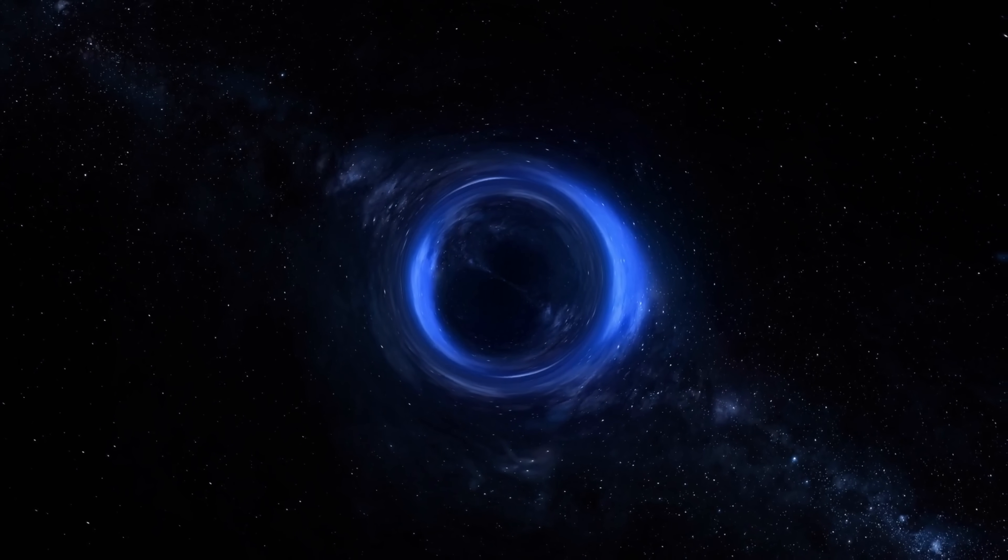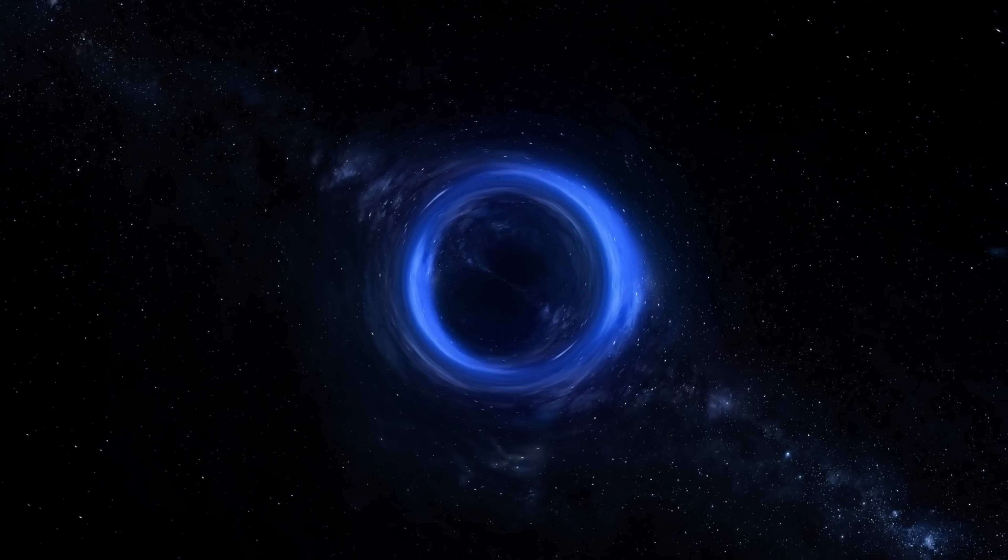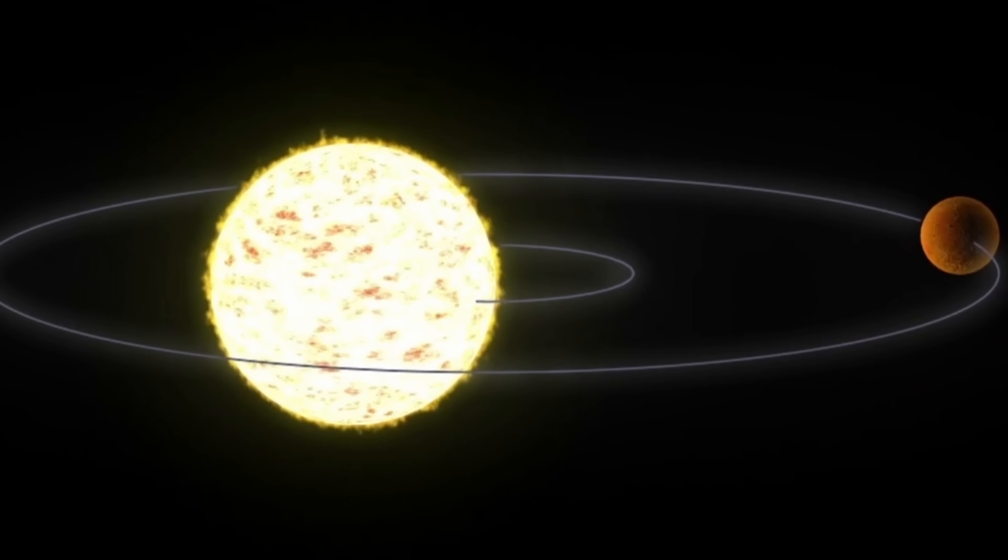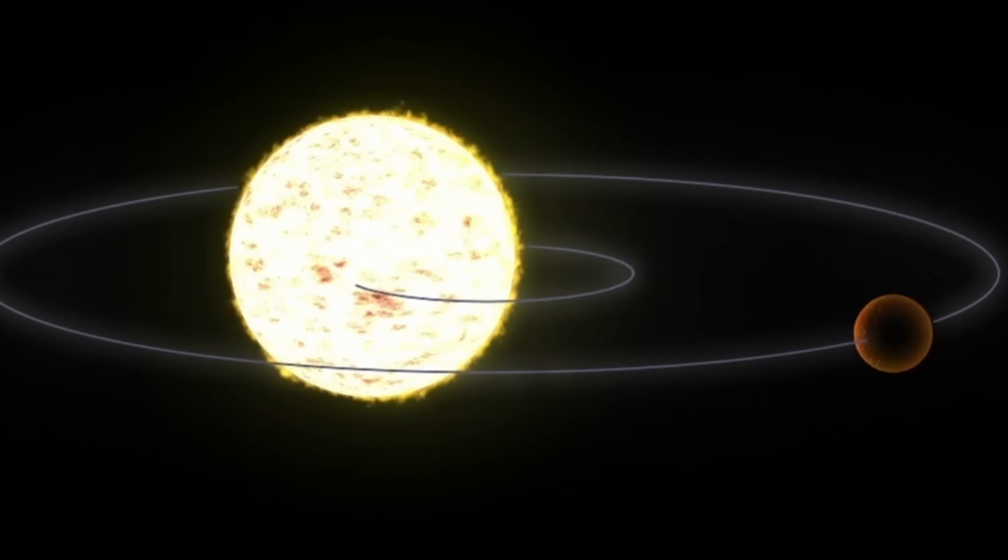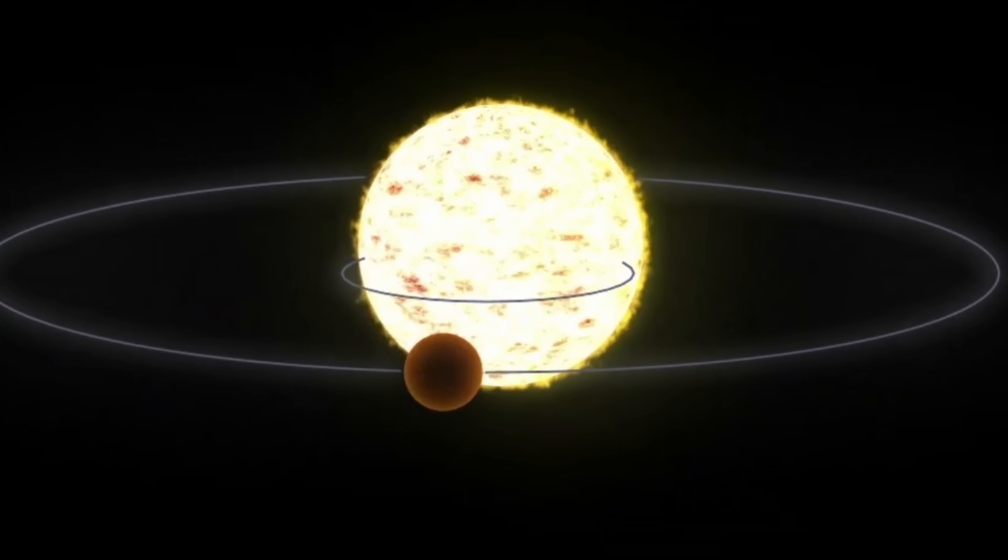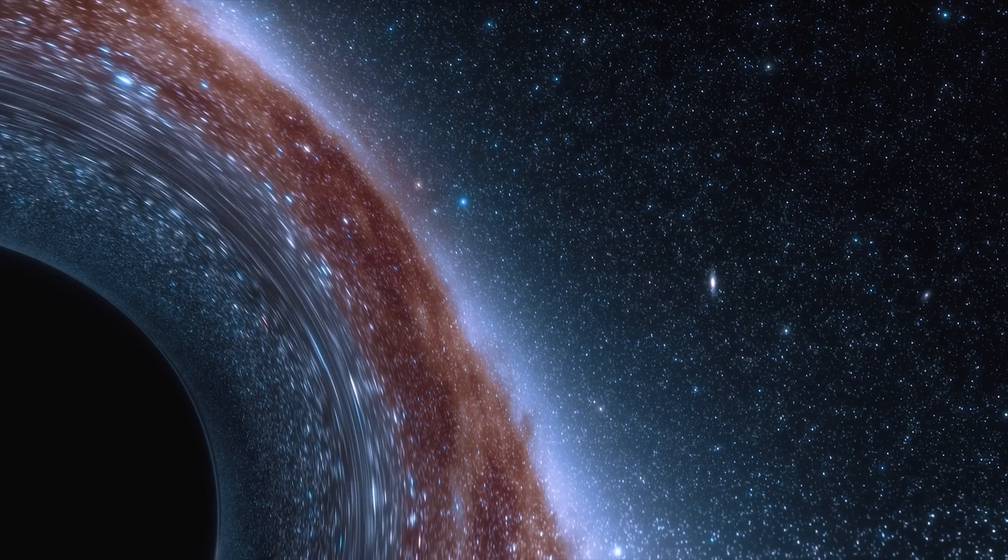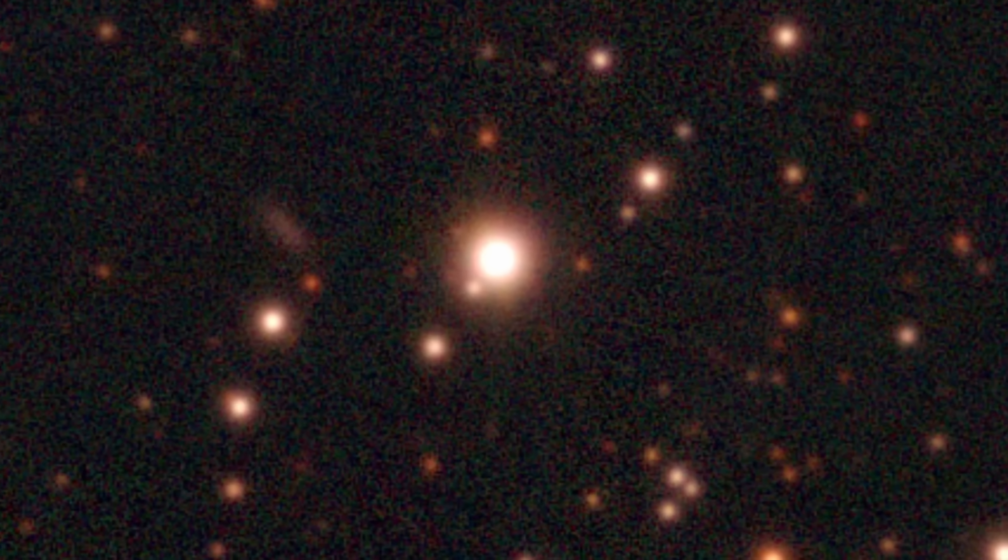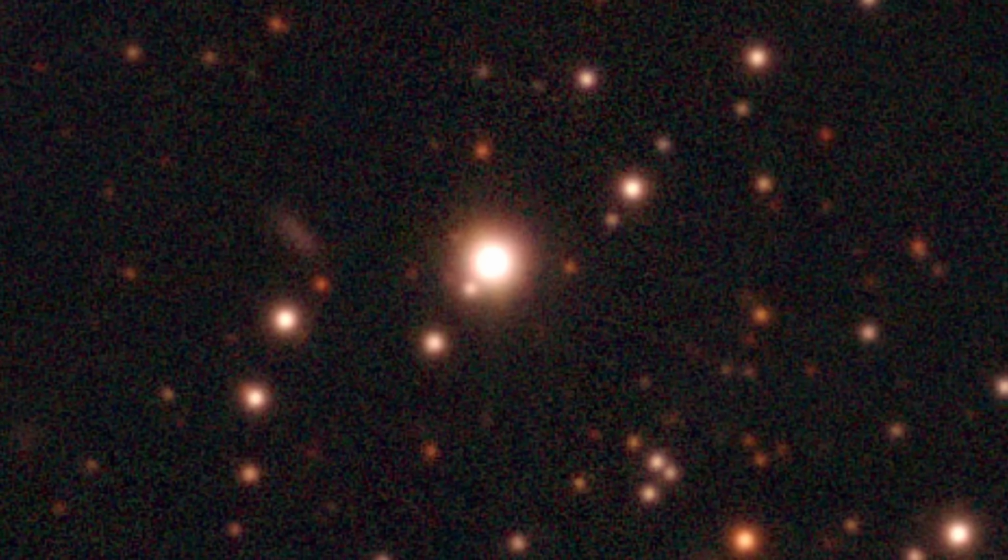And so for Gaia BH2, the black hole was estimated to be about 8.94 solar masses, or just under 9 times the mass of the sun, with the immense gravitational pull causing the visible companion to wobble as it orbits. In comparison, Gaia BH1 was orbiting a sun-like star, and even today is the closest black hole to us at approximately 1500 light years.